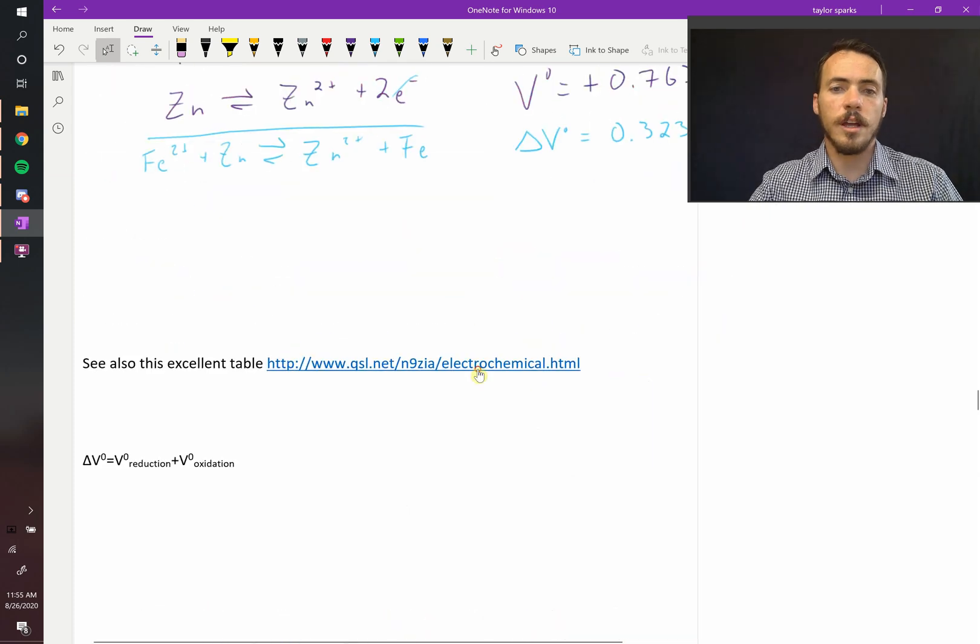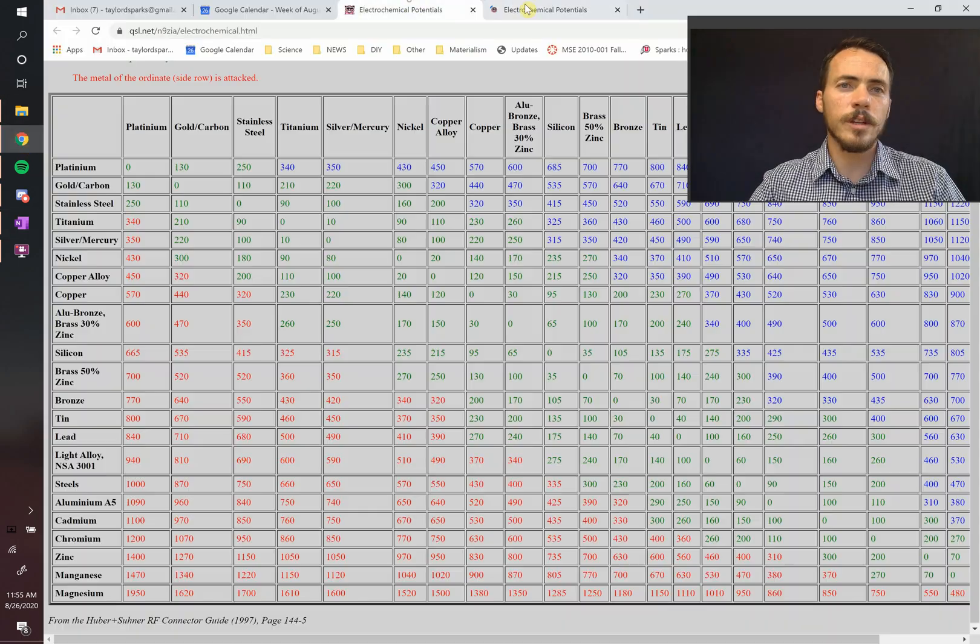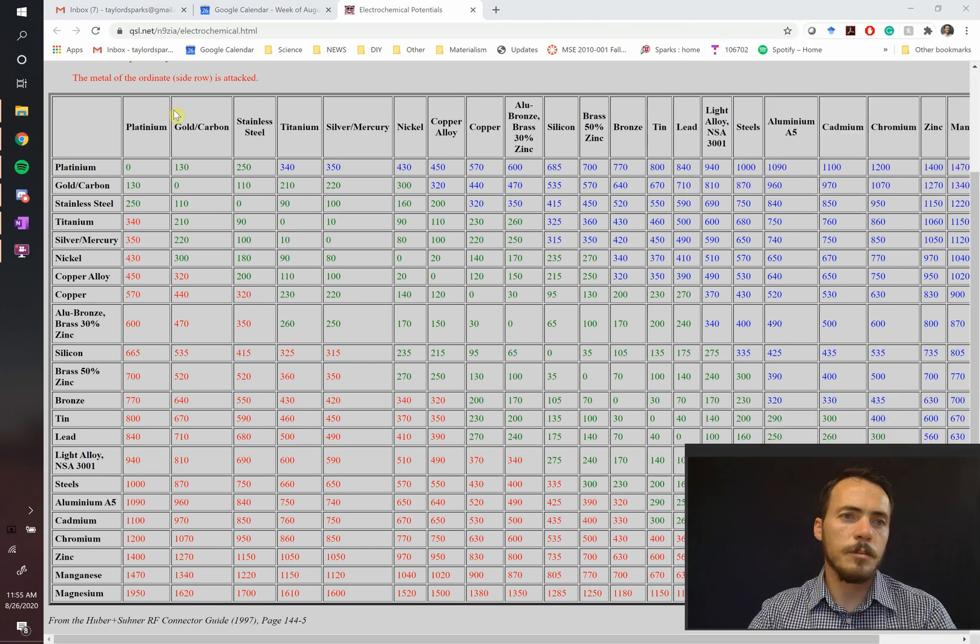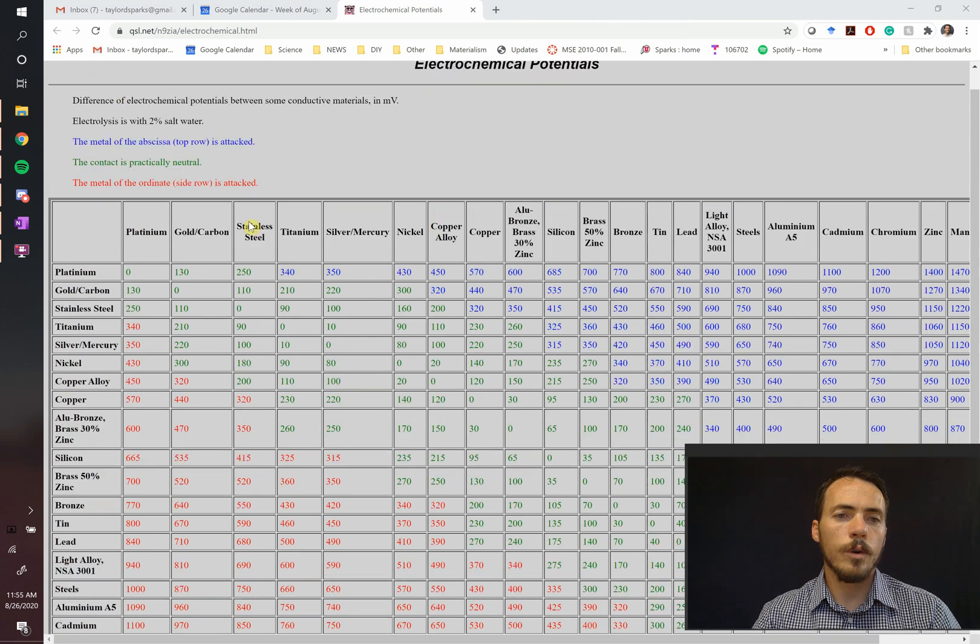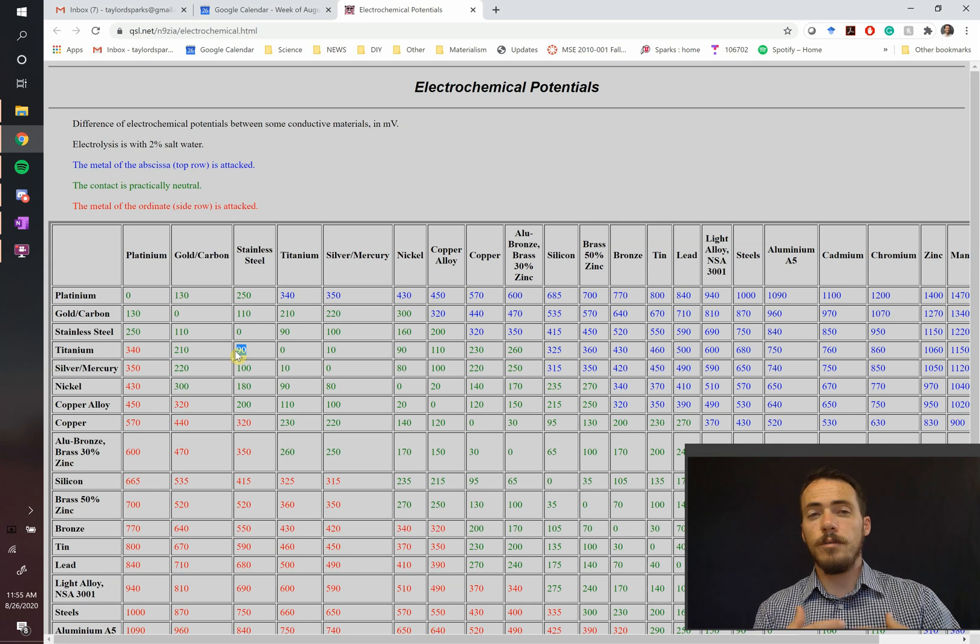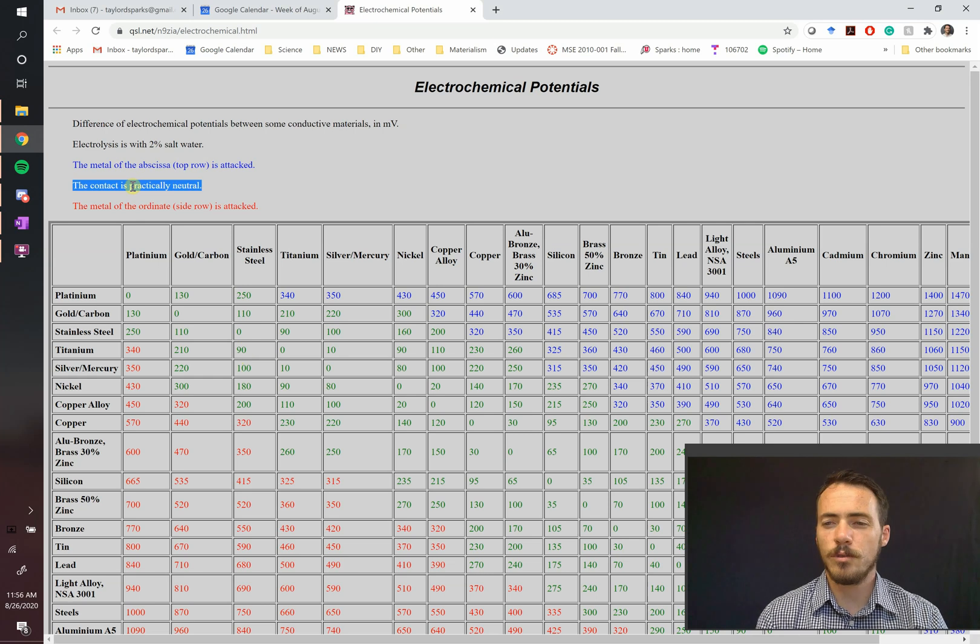There's also some really great tables out there. Like this table right here is really great. It shows a bunch of different engineering materials. And for these different engineering materials, it says, okay, if you put titanium together with stainless steel, what it shows here in this table is the difference in the electrochemical potentials in millivolts. So basically, with titanium and steel, you're going to have 90 millivolts of spontaneous voltage. So because that's a small number, they call this contact being practically neutral, meaning you're not going to see a lot of corrosion if you put titanium together with stainless steel.